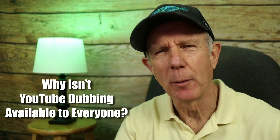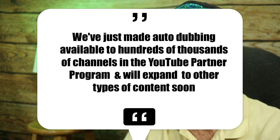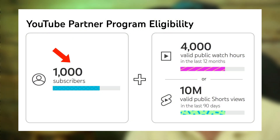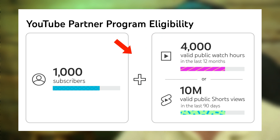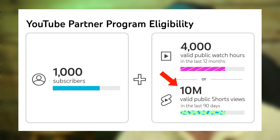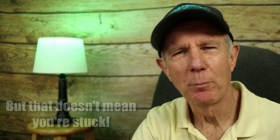Why isn't YouTube auto dubbing available to everyone? YouTube says they've just made auto dubbing available to hundreds of thousands of channels in the YouTube Partner Program and will expand to other types of content soon. That means you need 1,000 subscribers and 4,000 valid public watch hours in the last 12 months, or 1,000 subscribers and 10 million valid public Shorts views in the last 90 days. This means most smaller or newer channels won't have access to auto dubbing — but that doesn't mean you're stuck. There are tools right now that can do the heavy lifting without needing YouTube's official dubbing feature.